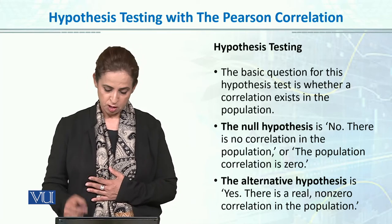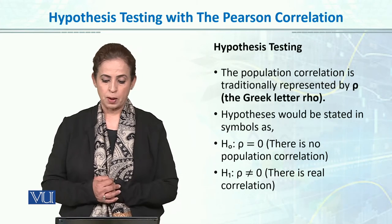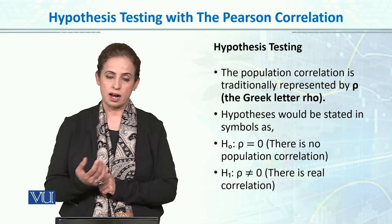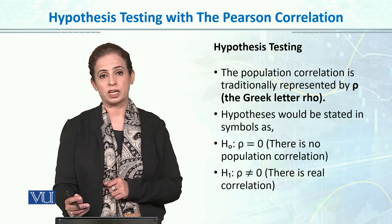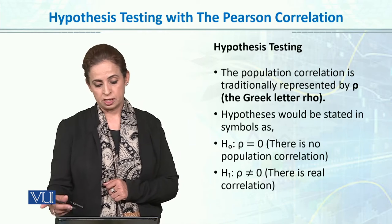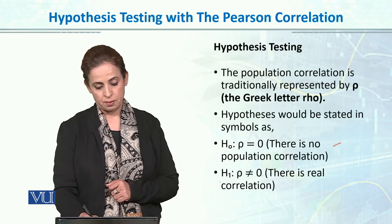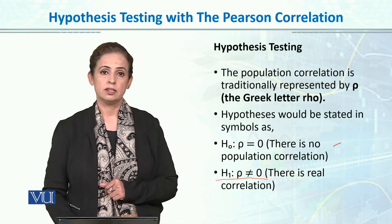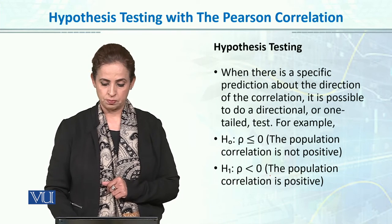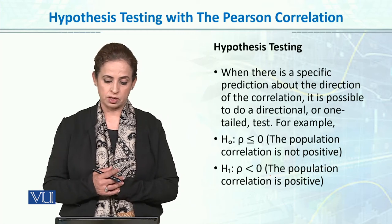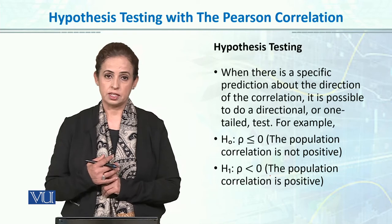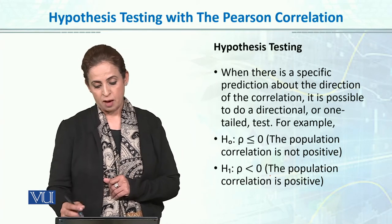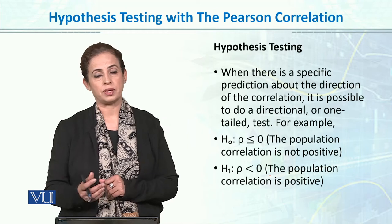We will make a null hypothesis and an alternative hypothesis. Null hypothesis is a hypothesis of no difference. We start with the assumption, like a true scientist, that there is no relationship between the two variables. Alternative hypothesis states there is a relationship or non-zero correlation in the population - that correlation is not zero but a relationship exists. The population correlation is traditionally represented by ρ (the Greek letter rho).